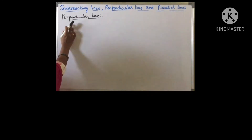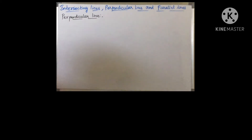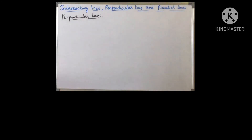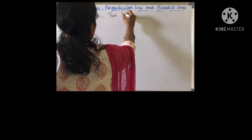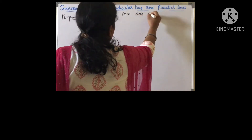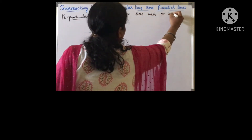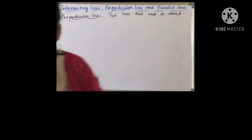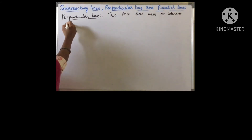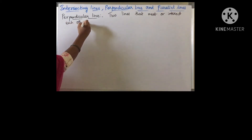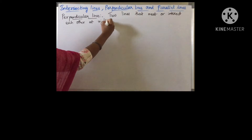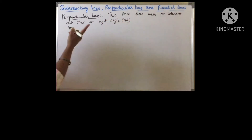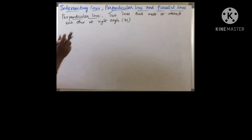Next are perpendicular lines. So what are perpendicular lines? In geometry, a branch of mathematics, perpendicular lines are defined as two lines that meet or intersect each other at a right angle. When the two lines intersect each other at a right angle, we call the two lines perpendicular lines.